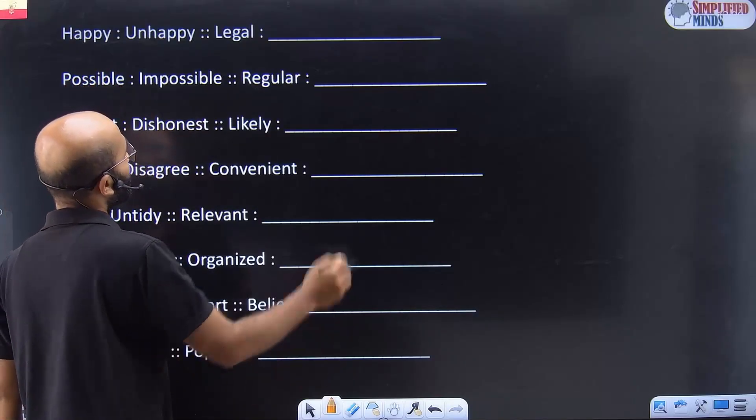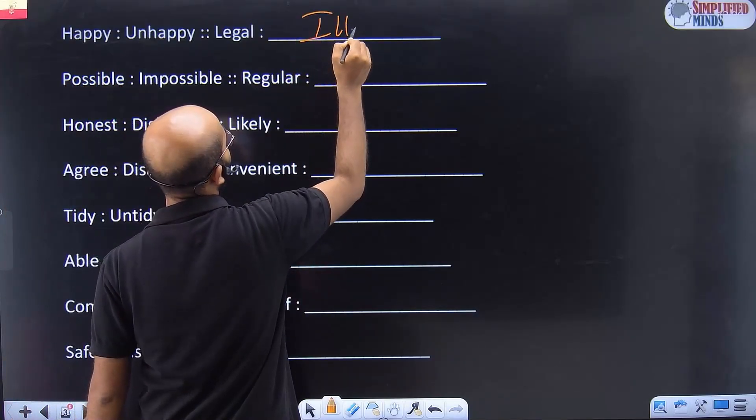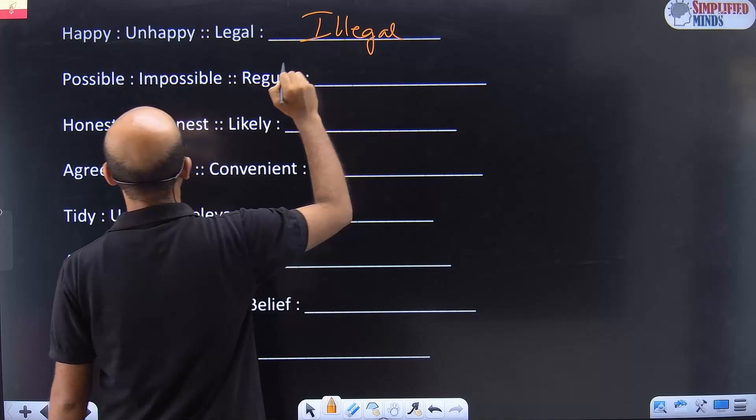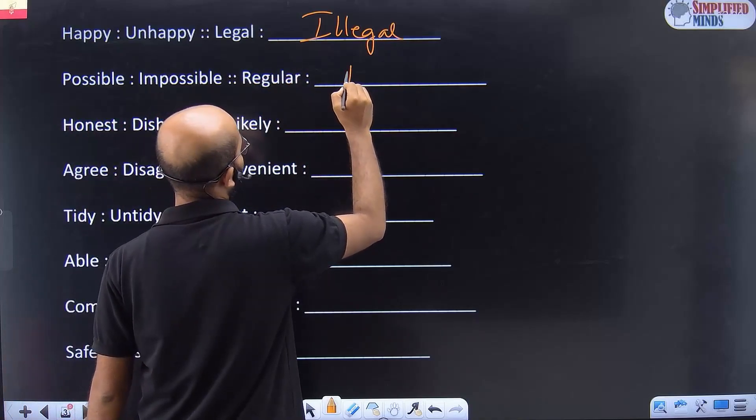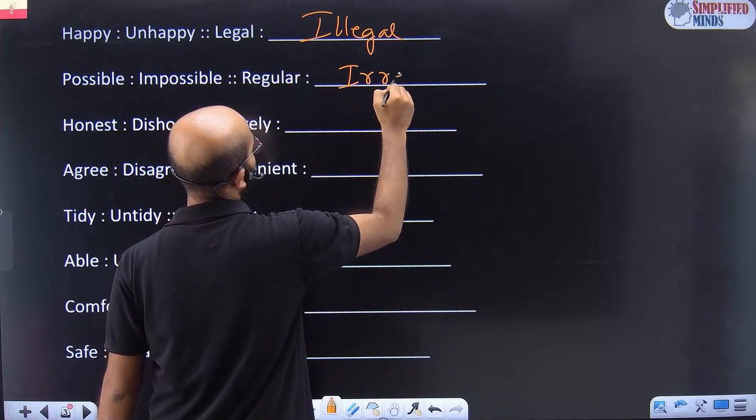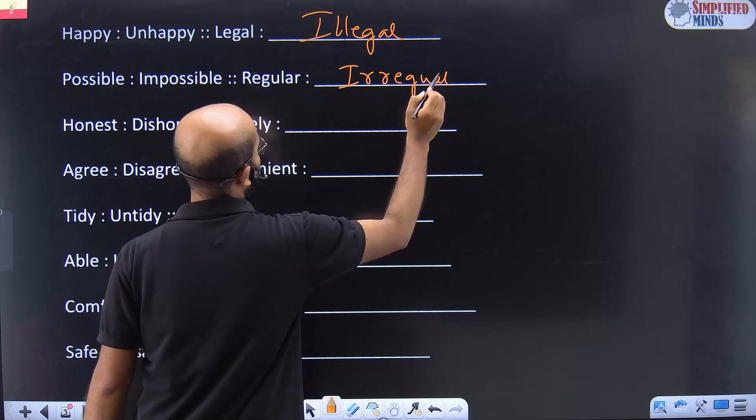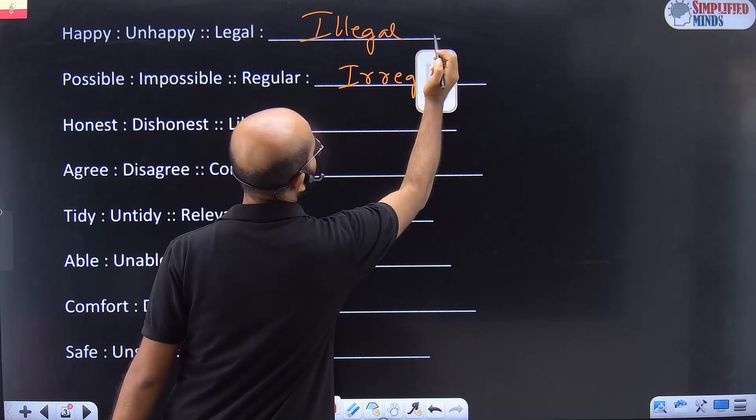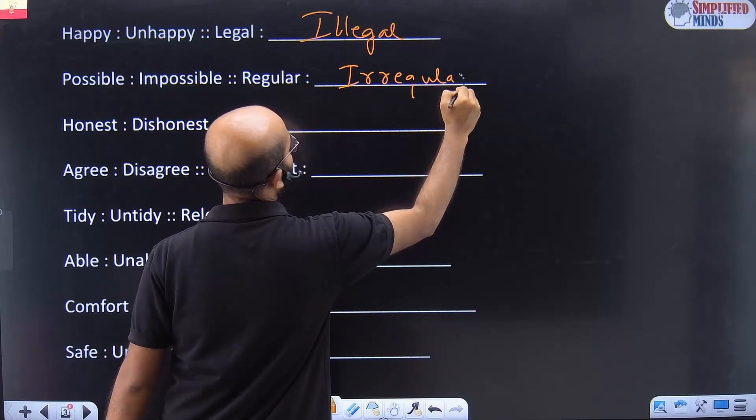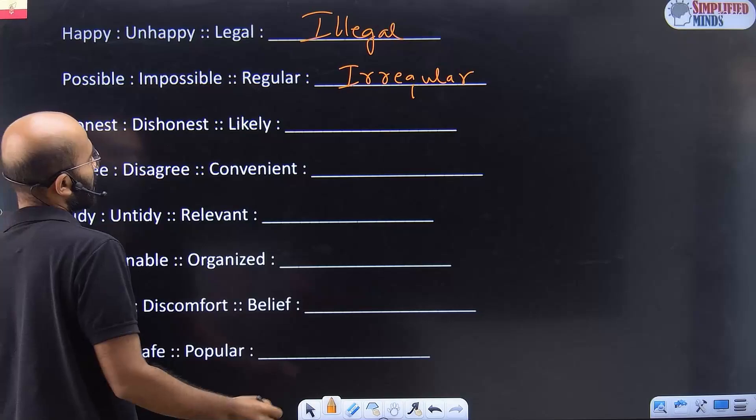Happy, unhappy. Legal, illegal. Possible, impossible. Regular, irregular. Honest, dishonest. Likely,